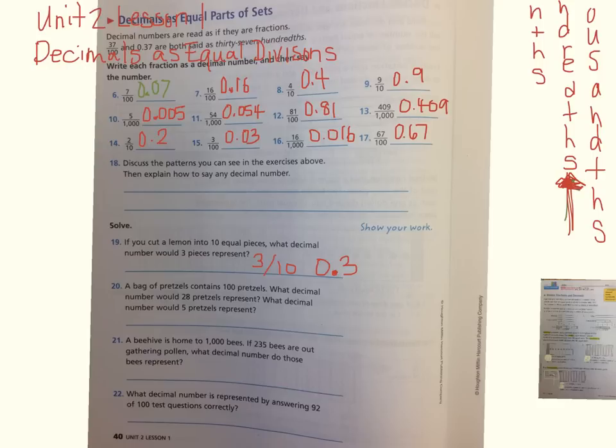A bag of pretzels has one hundred pretzels. What decimal number would twenty-eight pretzels represent? Twenty-eight out of a hundred, that's twenty-eight cents. Twenty-eight cents.